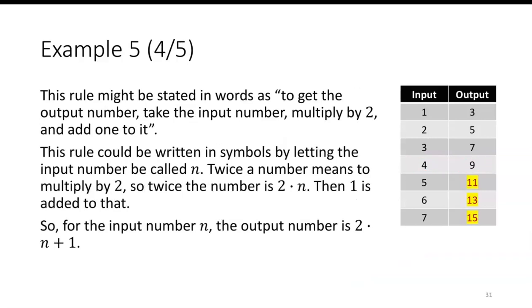This rule might be stated in words as to get the output number, take the input, multiply by 2, and then add 1 to it. So this rule can be written in symbols by using an input number called n. Twice the number means multiply by 2, so twice the number is 2 times n. Then 1 is added to it. So for the input number n, the output is 2 times n plus 1.